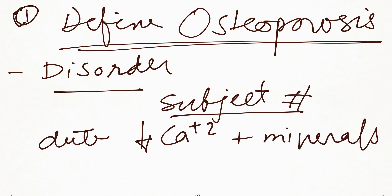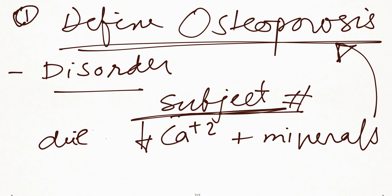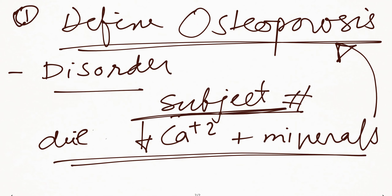Loss of calcium and other minerals is the cause and reason of osteoporosis. So the definition is: it is a disorder in which the bones become increasingly porous and brittle and subject to fracture, owing to loss of calcium and other mineral components.